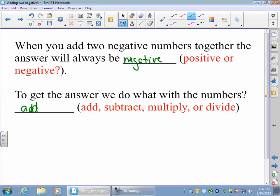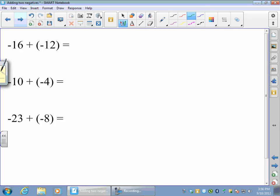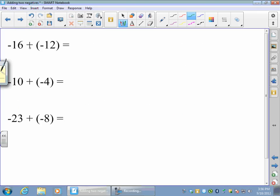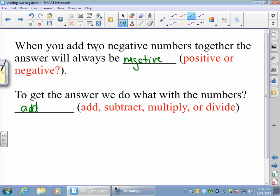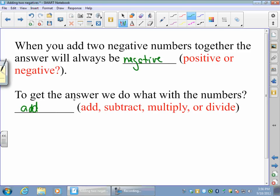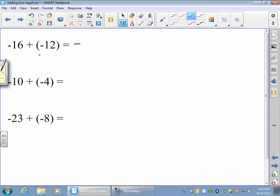So with these in mind, let's try a couple more. Now you have two different ways to do these problems. You can either draw a number line and move along the number line, or you can use this rule if you remember it. So I'm adding two negatives, negative 16 plus negative 12. My answer is going to be a negative. That's easy. To get my answer I'm actually going to add the numbers together. So 16 plus 12 gives me 28, and so my answer would be negative 28.